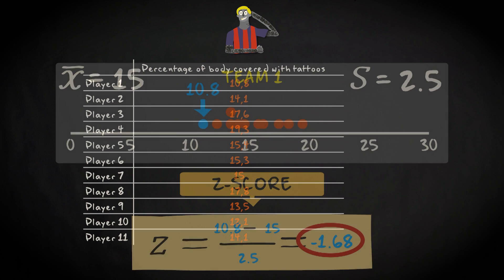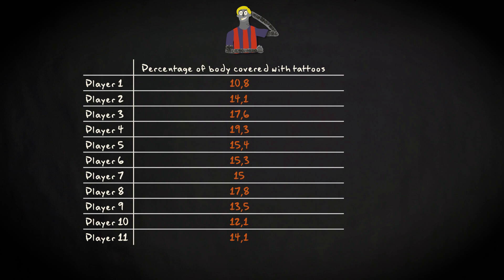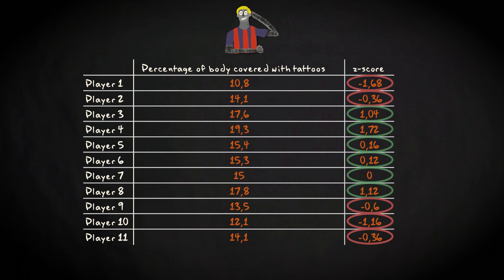You can do that for all the values in your distribution. If you do that, these are the results. Notice that you end up with negative z-scores and positive z-scores. Negative z-scores represent values below the mean, and positive z-scores represent values above the mean.